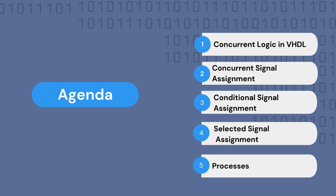The agenda for this video is as follows: we first take a look at what concurrent statements mean, and then we jump over and look at the different types of concurrent statements used within VHDL — the concurrent signal assignment statements, the conditional signal assignment statements, and the selected signal assignment statements. We also talk briefly about processes and how they are executed concurrently with the rest of the code but contain sequential logic within them.